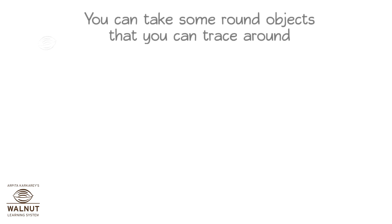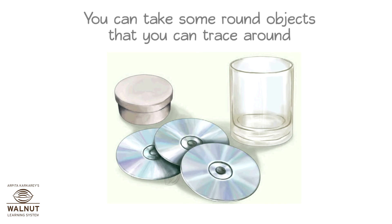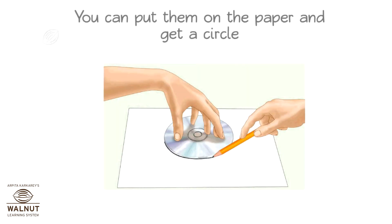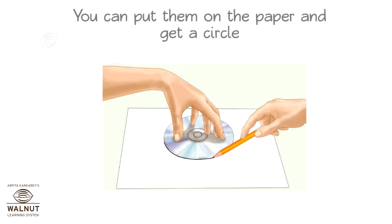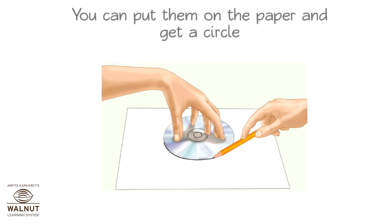You can take some round objects and trace around them on paper to get a circle. The only problem is you cannot get a circle of any size — it will always be the size of the object you are tracing. What if you want circles of many different sizes? Will you collect so many different objects to trace around?